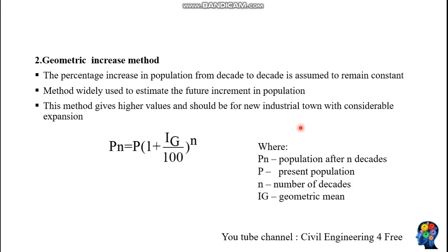The second method is the geometric increase method. In this method, the percentage increase in population from decade to decade is assumed to be constant. This method is usually employed for industrial towns that are currently expanding at a higher rate. Pn is the future population, P is the present population, n is the number of decades, and ig is the geometric mean.